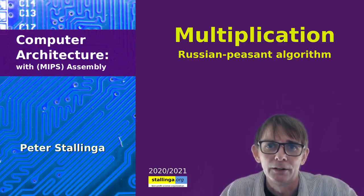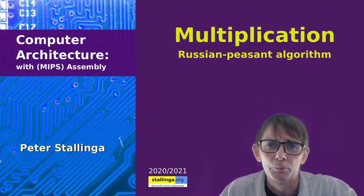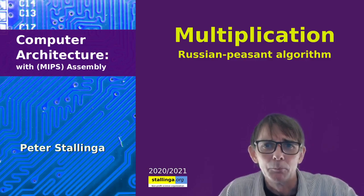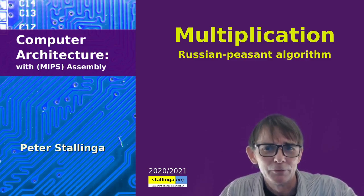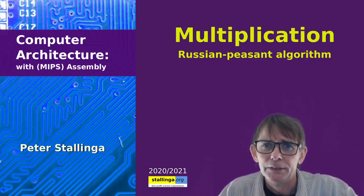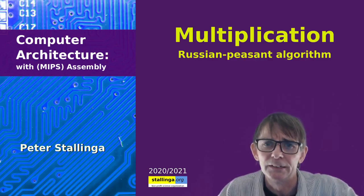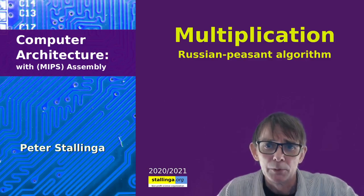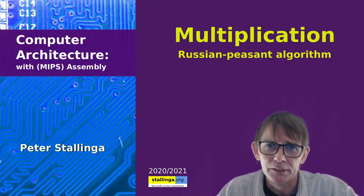Hello everybody and welcome to another lecture on computer architecture. Today I'm going to talk about multiplication and how that is done in a computer. The algorithm being used is called the Russian peasant algorithm, and in fact it's not doing so much multiplication as it is doing shift, mask, and adding — because multiplication is mostly not implemented in hardware.